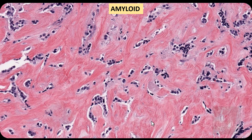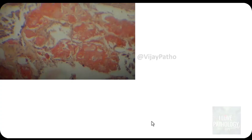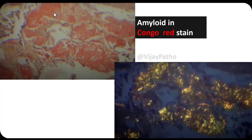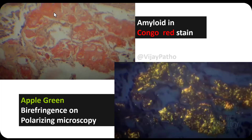So the pattern is solid sheets, nests, insular or trabecular arrangement of polygonal cells, separated by a stroma containing amyloid. If you stain this amyloid with the special stain Congo red, it stains brilliant red. When this Congo red-stained section is examined under polarizing microscopy, you classically find apple green birefringence — that is how amyloid is demonstrated.